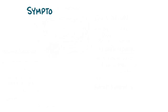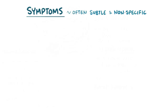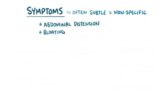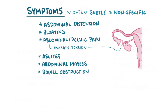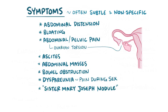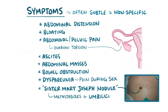Generally speaking, symptoms of ovarian cancers can be subtle and nonspecific. Common early symptoms include abdominal distension, bloating, as well as abdominal or pelvic pain, which can come from an ovarian torsion, where the ovary gets twisted. Occasionally, ovarian tumors can cause ascites, abdominal masses, bowel obstruction, or dyspareunia, which is pain during sexual intercourse. A classic finding is a Sister Mary Joseph nodule, which happens when the cancer metastasizes to the umbilicus — a finding often linked with ovarian cancer.